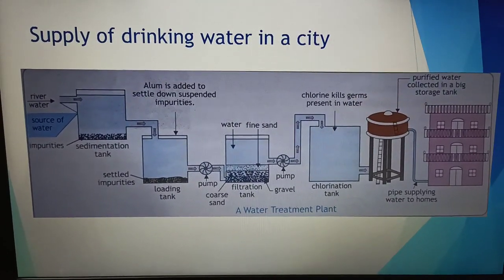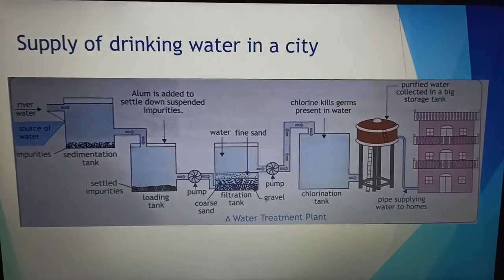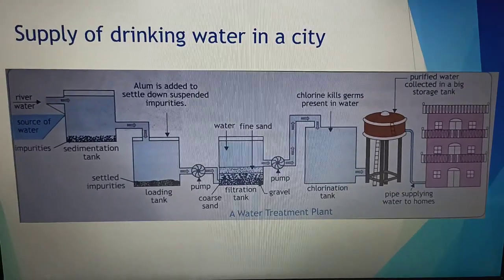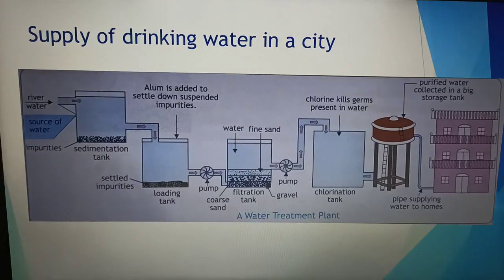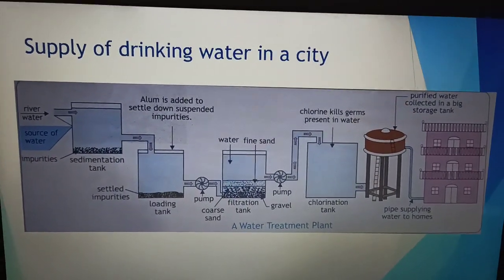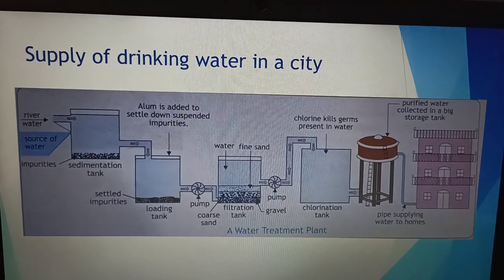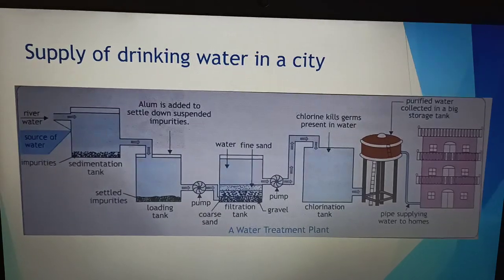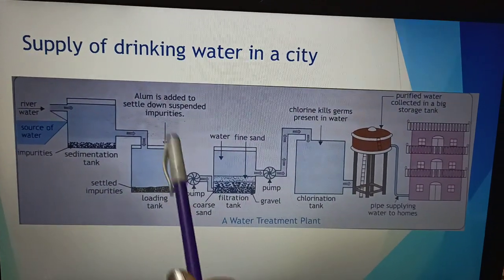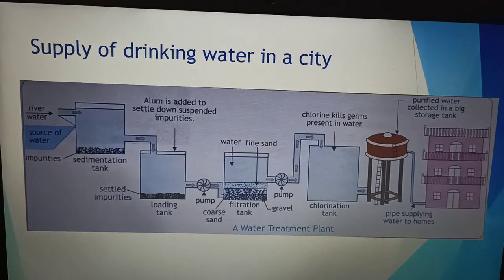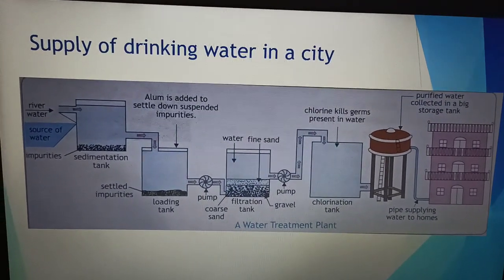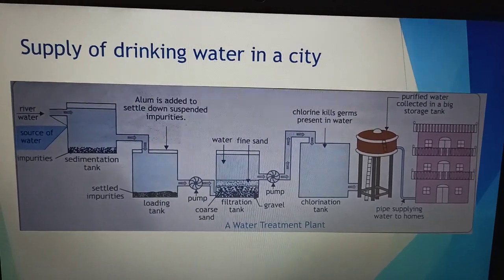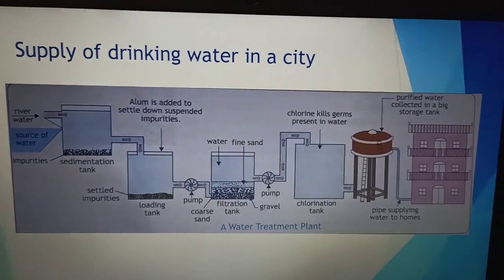Suspended impurities are solid particle impurities which are suspended in the liquid — they are not settled properly and not dissolved properly. These particular impurities can be separated by leaving the container undisturbed for a very long time. Depending on the amount of water in the container, the time period will change — more water means more time.